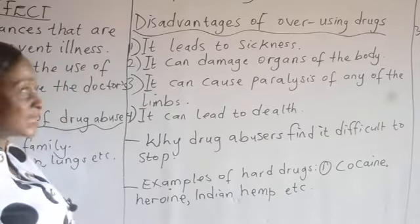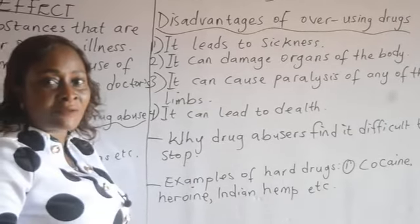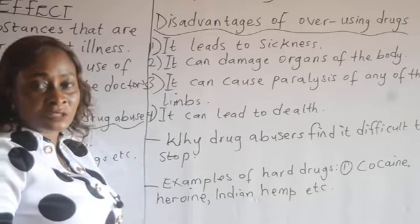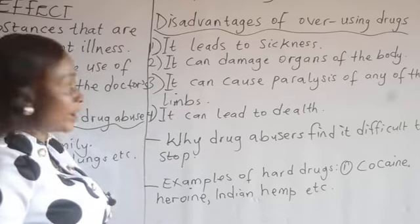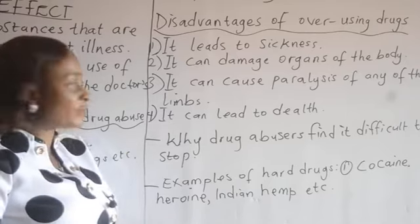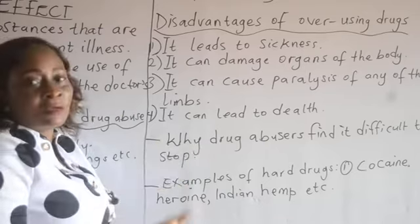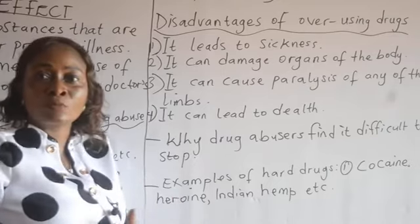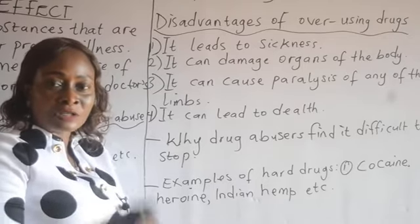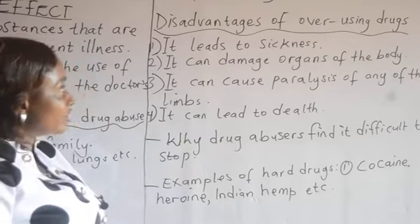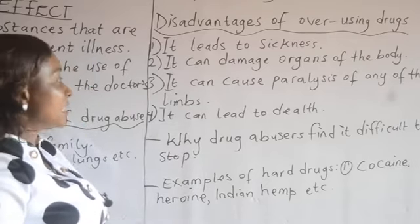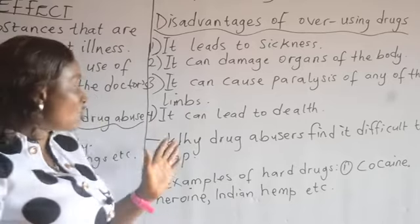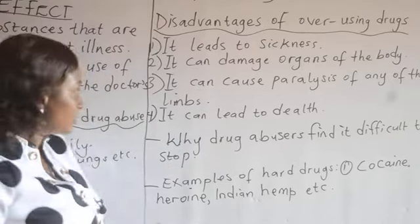Disadvantages of overusing drugs. Number one: it can lead to sickness. Taking drugs every now and then can lead to sickness. Number two: it can damage organs of the body — like the lungs, the liver, and the brain. Number three: it can cause paralysis of any of the limbs, either the hands or the legs, making the person unable to move or lift their hand or move their legs. Number four: it can ultimately lead to death. When you overuse drugs, it can ultimately cause death.